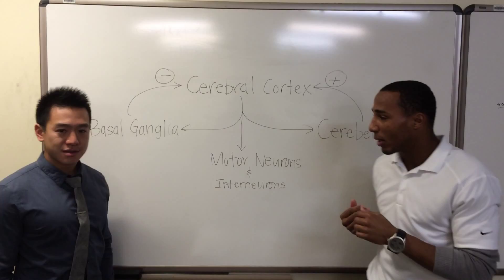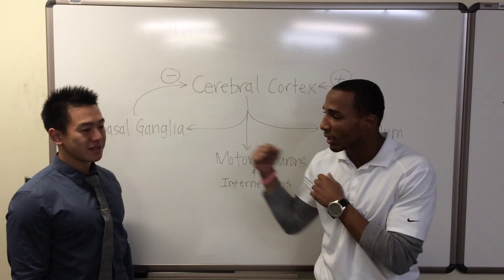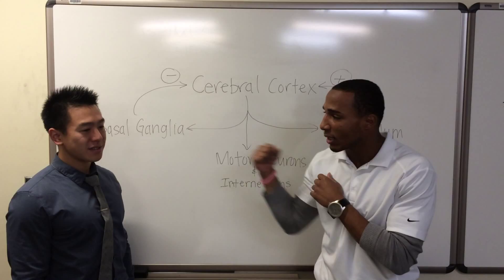Put this in simple terms, the cerebellum is responsible for me initiating the actual punch. But basal ganglia again is responsible for refined movements. It inhibits my actual hitting of his face.